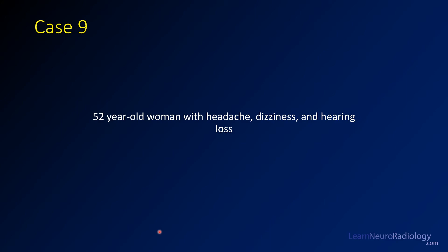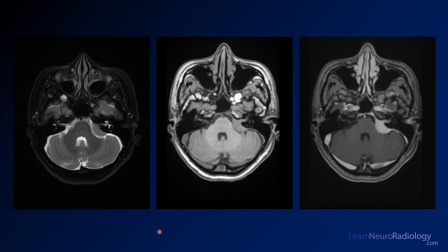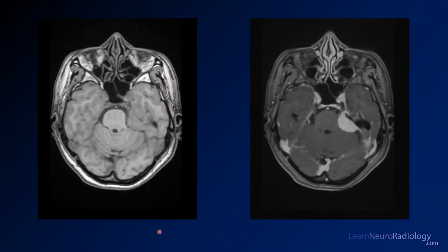A patient presents with headache, dizziness, and hearing loss. Here you see some images from the posterior fossa through the temporal bones. Here you see additional images from that level — these are pre- and post-contrast images.